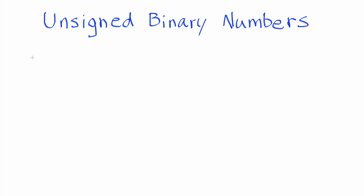In the last video I showed you guys that 101 is the binary representation for the whole number that we know to be 5. The 5 is base 10 and the 101 is going to be a base 2 representation, or a binary representation. I showed you how to go from binary to base 10 in the last video. In this video I'm going to show you how to go from base 10 to binary.